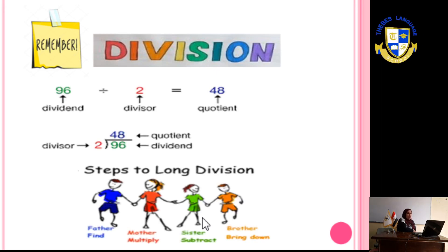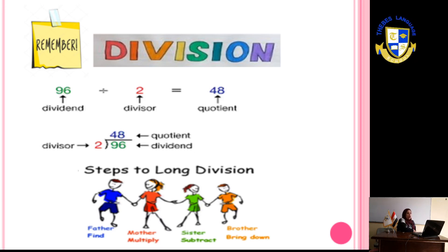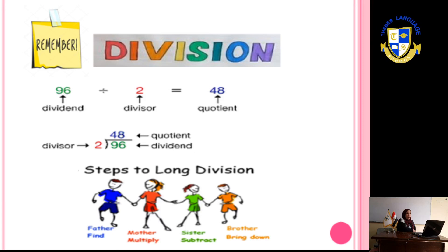When I say 96 divided by 2, the answer will be 48. 96, as we said before, is called the dividend. And 2 is called the divisor. The answer is called the quotient. So, 96 divided by 2 equals 48.